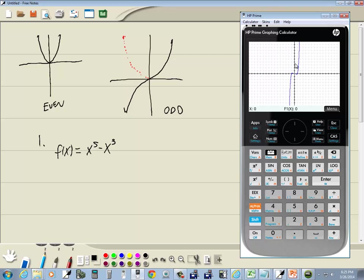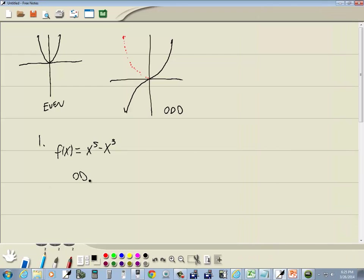If I take this piece here, flip it across the y-axis, it'd look like this. And flip it across the x-axis, it'd land exactly on this part of the graph. So this one, by that observation, is odd. It's symmetric to the origin.